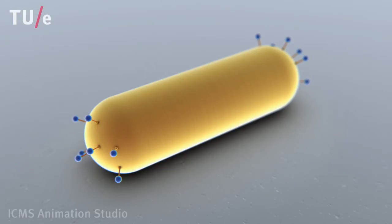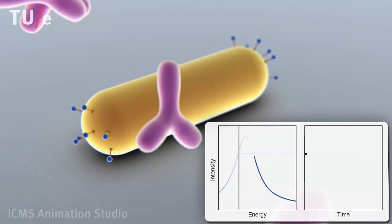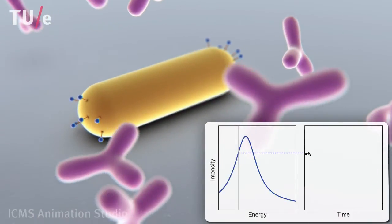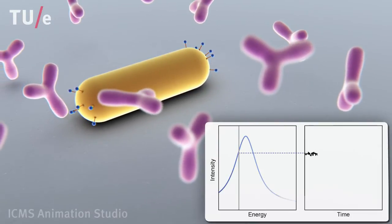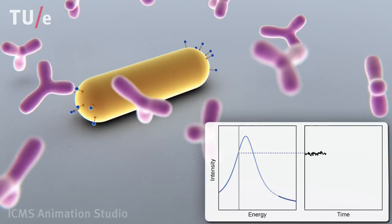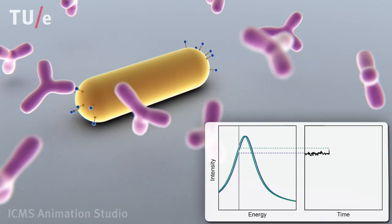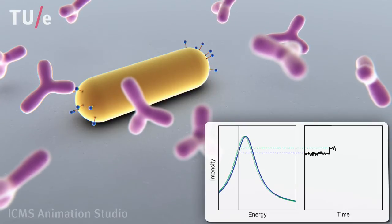The binding of antibodies is measured by monitoring the scattered light of each nanoparticle using a narrowband light source. The shift of the spectrum results in a change of the scattered intensity. An antibody binding to a receptor results in a stepwise change in the detected light intensity. Each step corresponds to a single binding event.